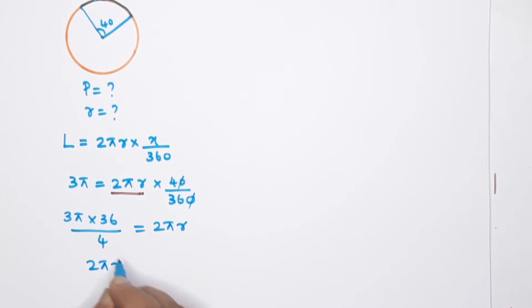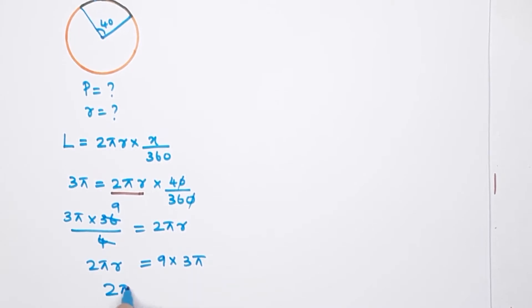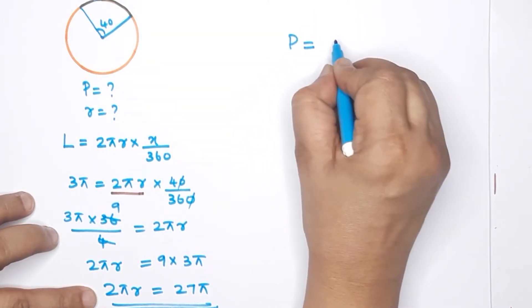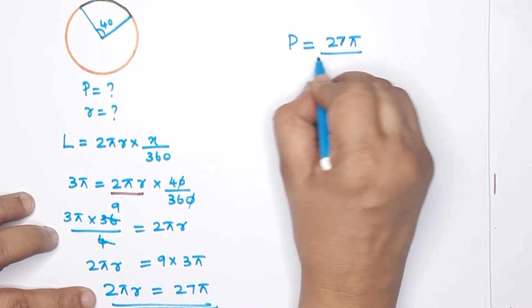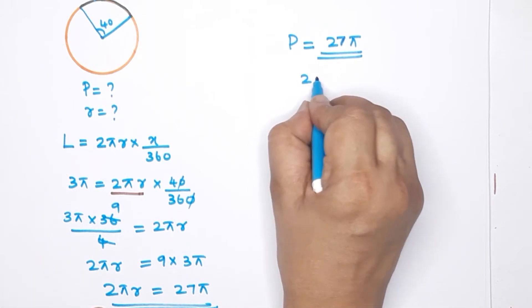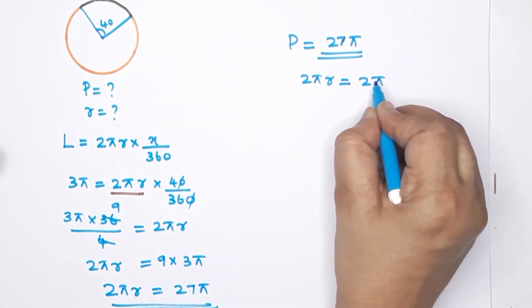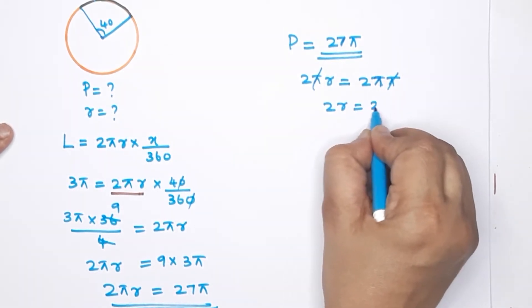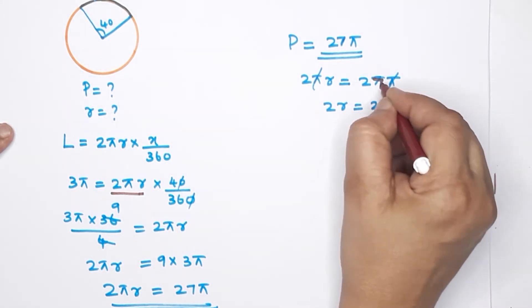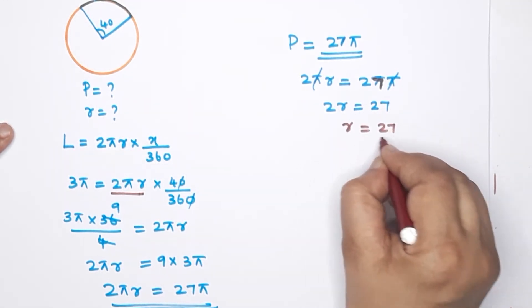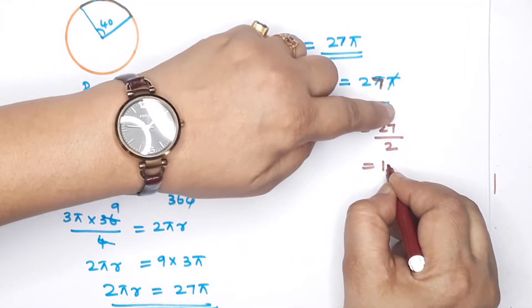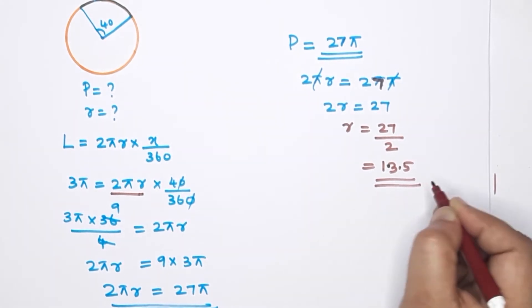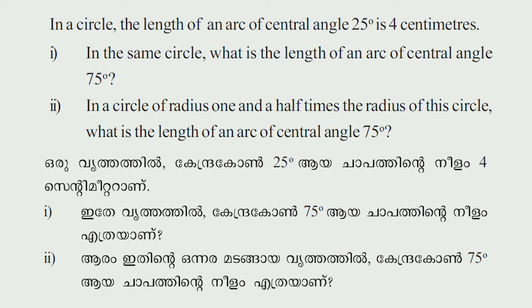The perimeter is 27π. So 2πr = 27π. We cancel π on both sides, giving 2r = 27, therefore r = 27/2 = 13.5 centimeters.